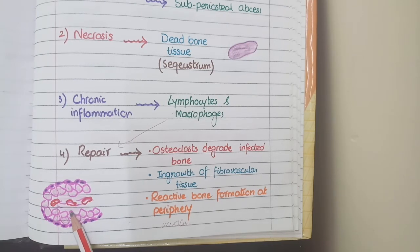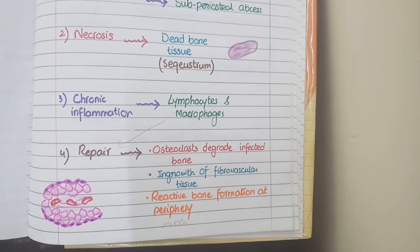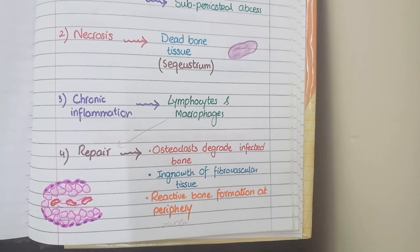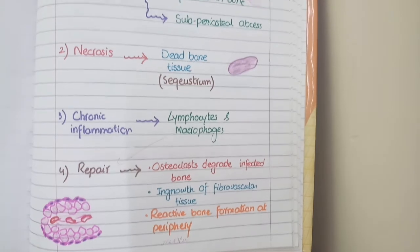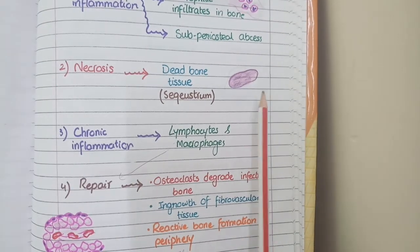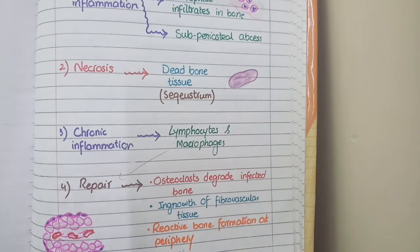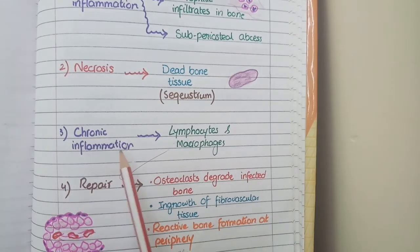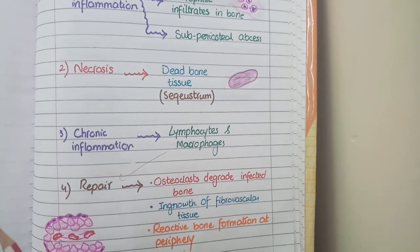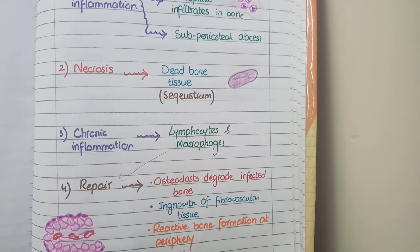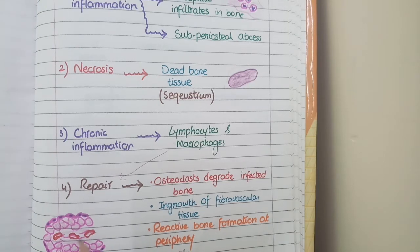Overall in acute osteomyelitis: firstly you see acute inflammation, then you see sequestrum which is a piece of necrotic bone, then you see chronic inflammatory cells that are lymphocytes and macrophages, and at last in the repair process you see a central fibrovascular core surrounded by reactive bone formation.